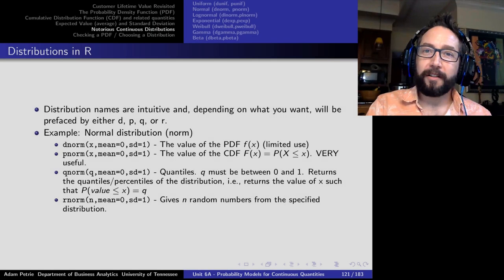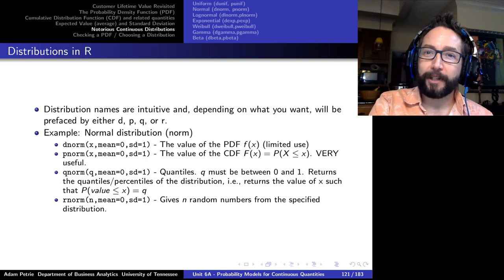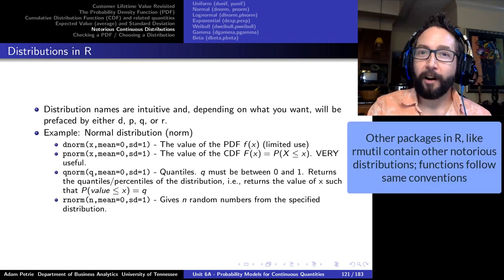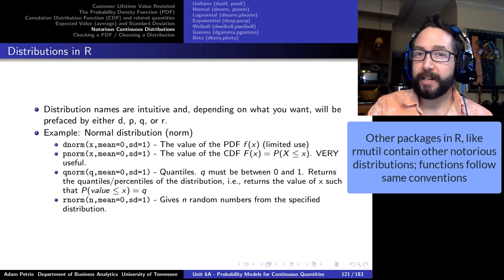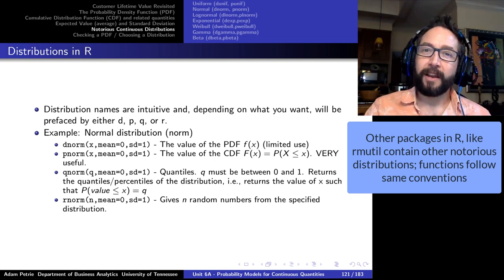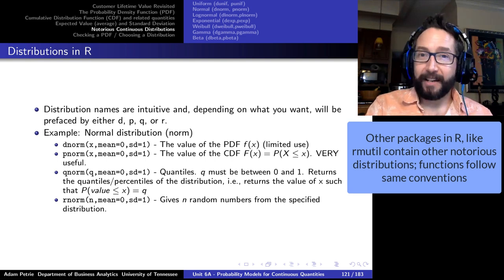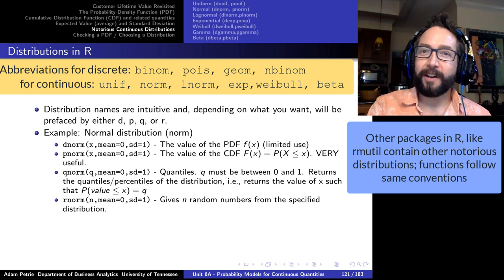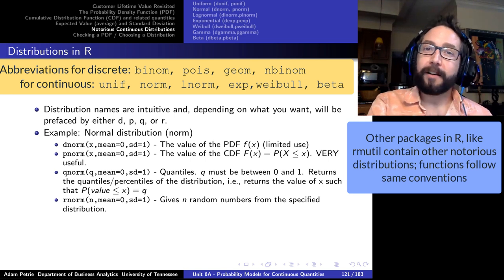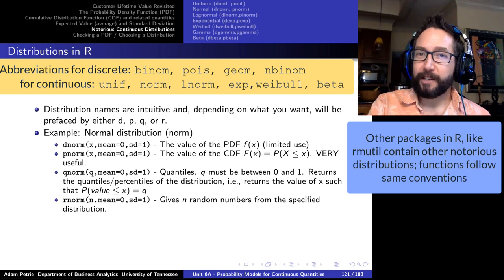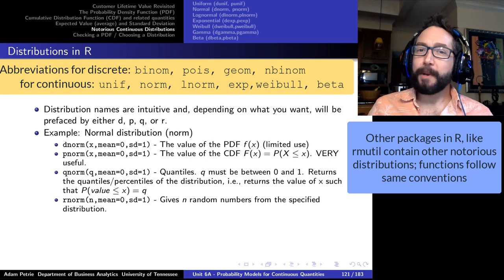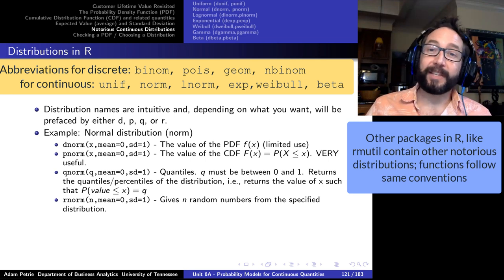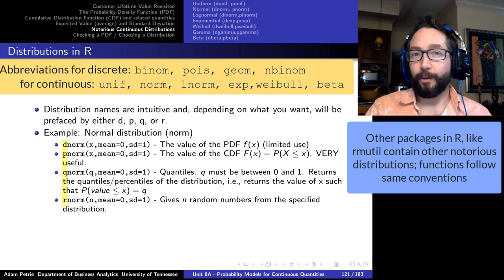So what distributions do we want to be familiar with, and how are we going to work with them in R? It's going to work similarly to when we discussed notorious discrete distributions like the Poisson and binomial. We identify the distribution with a short abbreviation — like 'pois' for Poisson, 'binom' for binomial — and then prefix it with a D, P, Q, or R.